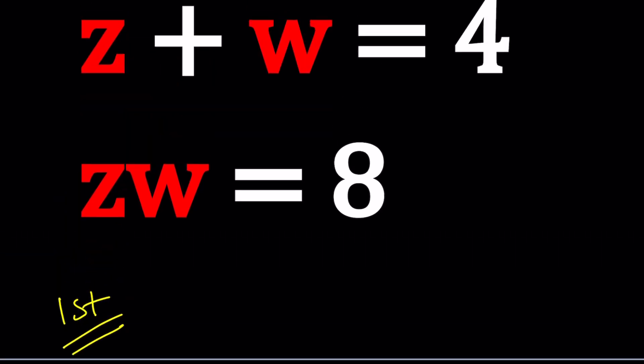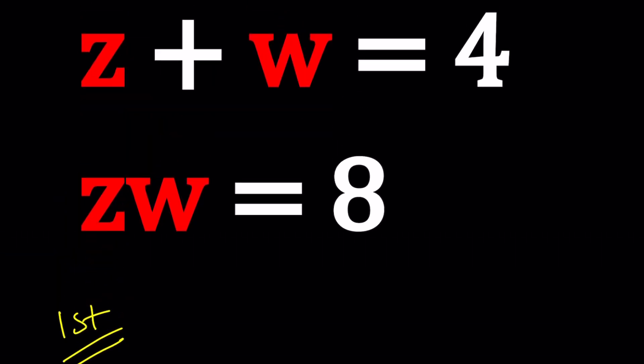So for my first method I'd like to use substitution. Isolate w. You get 4 minus z. And then in this equation replace w with 4 minus z and set it equal to 8 because zw equals 8. Now you get a single variable.